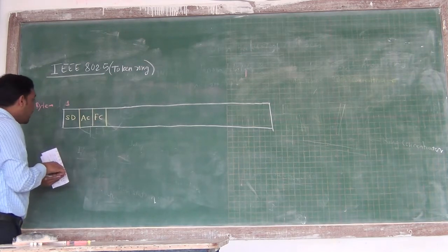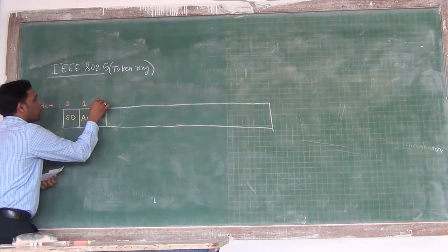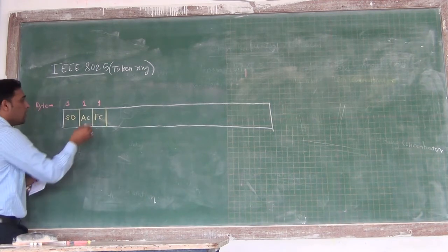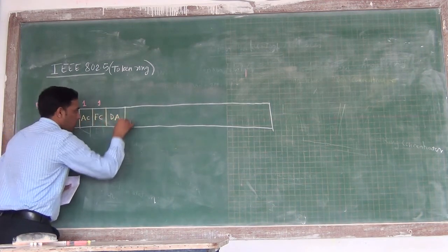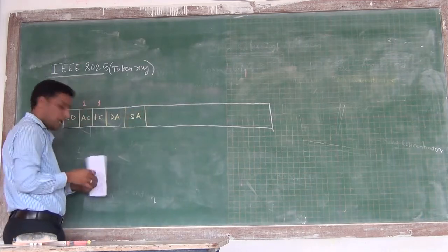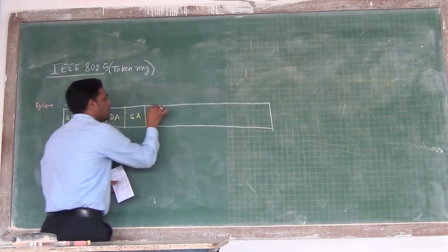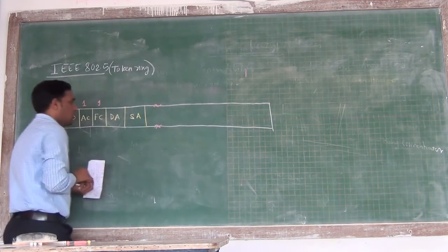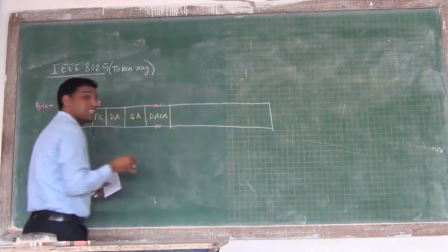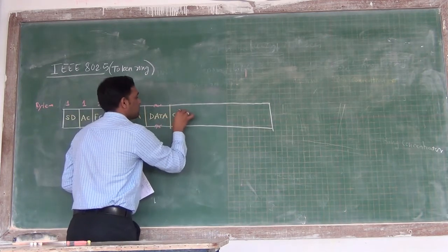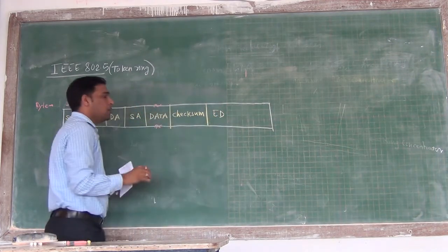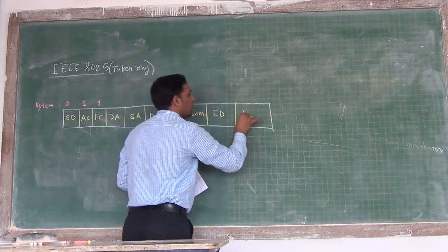After access control there is a frame control section. Each one of these fields takes one byte to store in memory. Then it follows the destination address, then the source address, then the data. Then checksum is used, followed by the end delimiter, and the last section is basically the frame status.